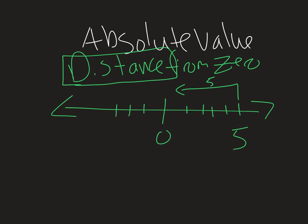And likewise, negative 5 also is 5 away from 0. So absolute value, we usually denote with these two little lines to the side of it. This is saying absolute value.